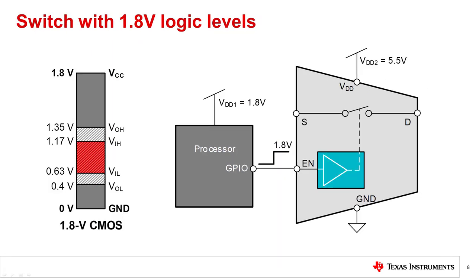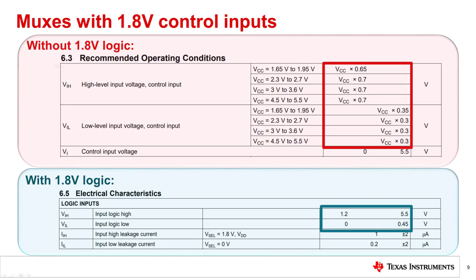In this example, you can avoid using a level translator by choosing a switch with 1.8 volt logic capability. These switches have internal translators, ensuring that the control input thresholds remain fixed, regardless of supply voltage. This allows you to simplify design and save system size and cost. The VIH and VIL levels of each switch or MUX can be found in the recommended operating conditions or electrical characteristics section of the datasheet.